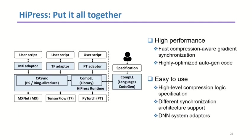Finally, we put the synchronization system and compiler together to compose a high-performance and easy-to-use compression-aware DNN training framework named HAPRES. HAPRES can run on mainstream DNN systems such as MXNet, TensorFlow, and PyTorch, and provides a high-level API for users to launch data-parallel DNN training and exercise different gradient compression algorithms.